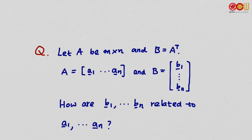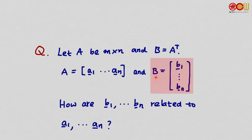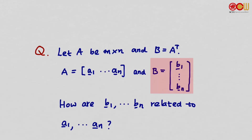A question: suppose A is m by n and B = A transpose. For A, we write out its column vectors a_1 to a_n, and for B we write out its row vectors b_1 to b_n. Since A is m by n, B is n by m, so B has n row vectors. These b_i are the row vectors. How are b_1 to b_n related to a_1 to a_n?